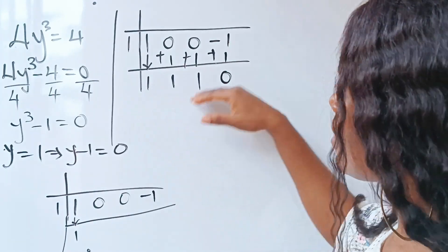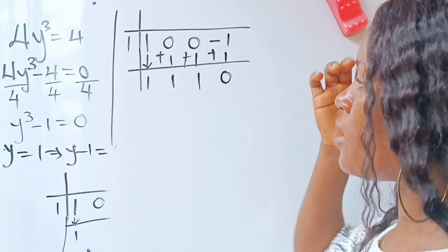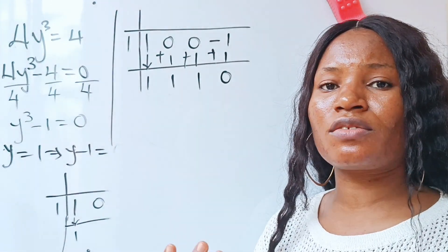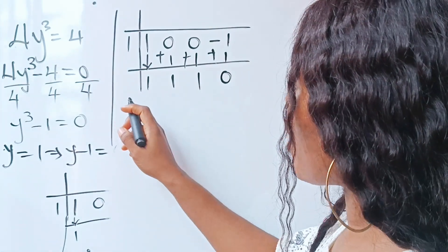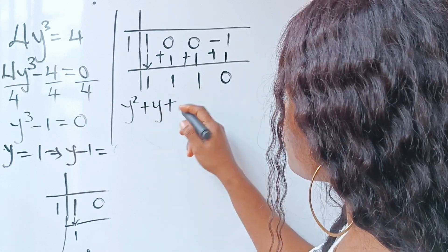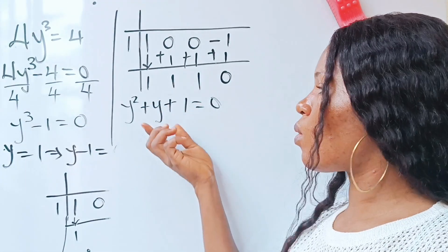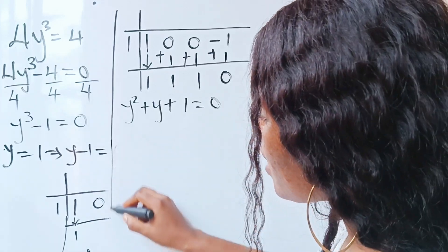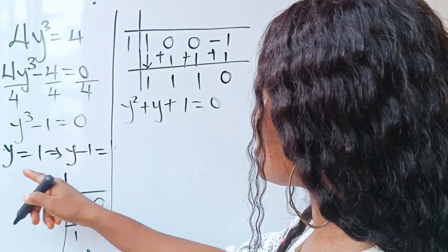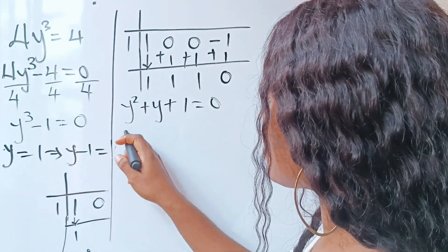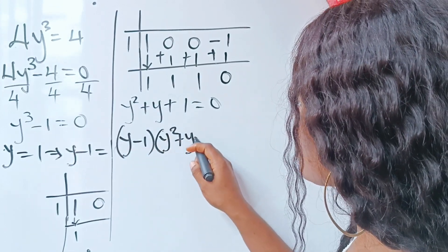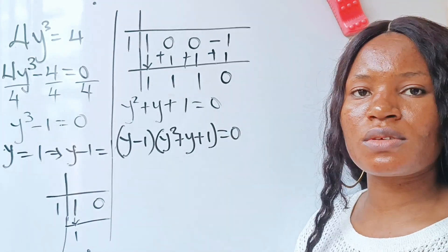So we have formed our quadratic equation here. What is the quadratic equation formed? We have 1y². Since it's a quadratic equation, I'm going to start from y², right? So we have 1y², that is y², plus 1y, that is y, plus 1 = 0. So this is the quadratic equation. Now these are the two factors of this particular cubic polynomial. The first one is y - 1 = 0, right? So we have (y - 1) multiplied by (y² + y + 1) = 0.